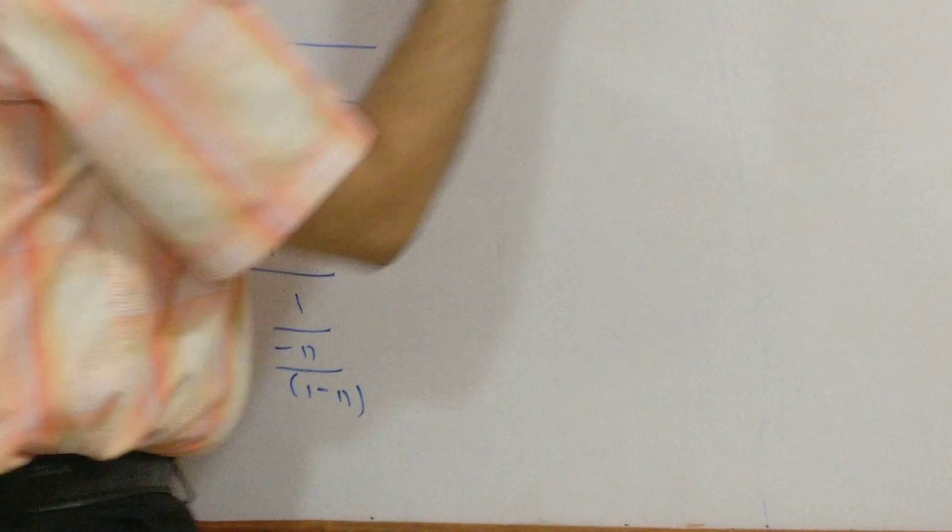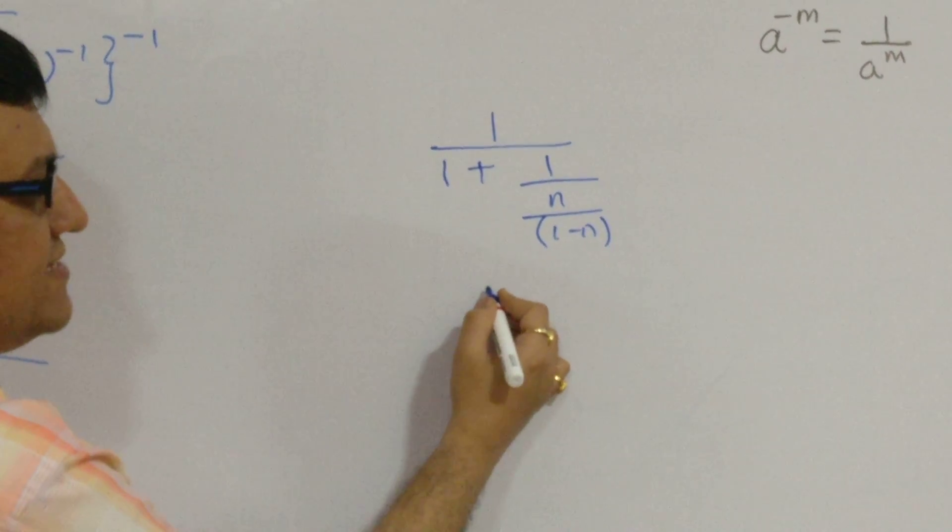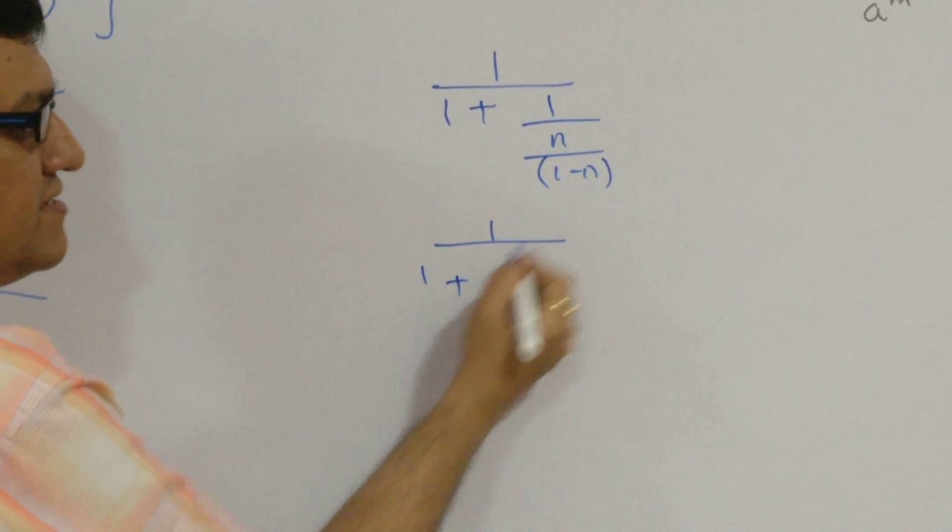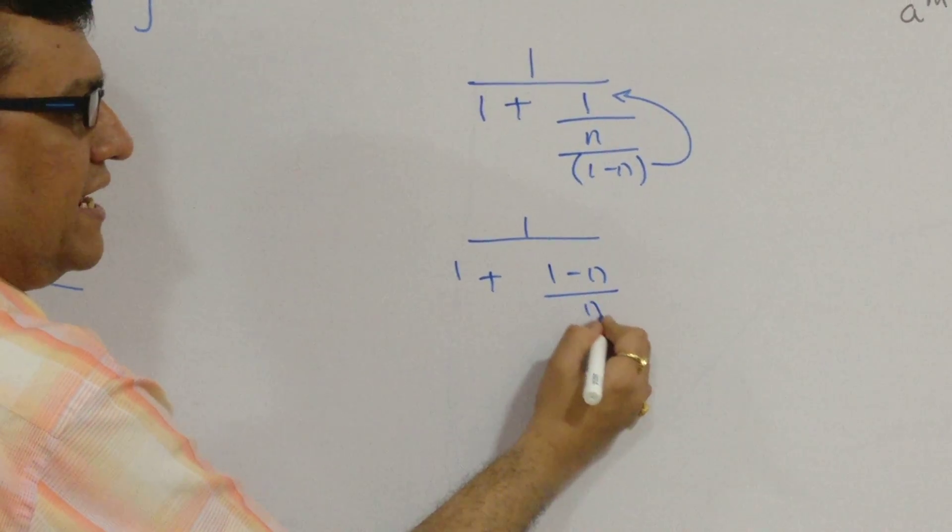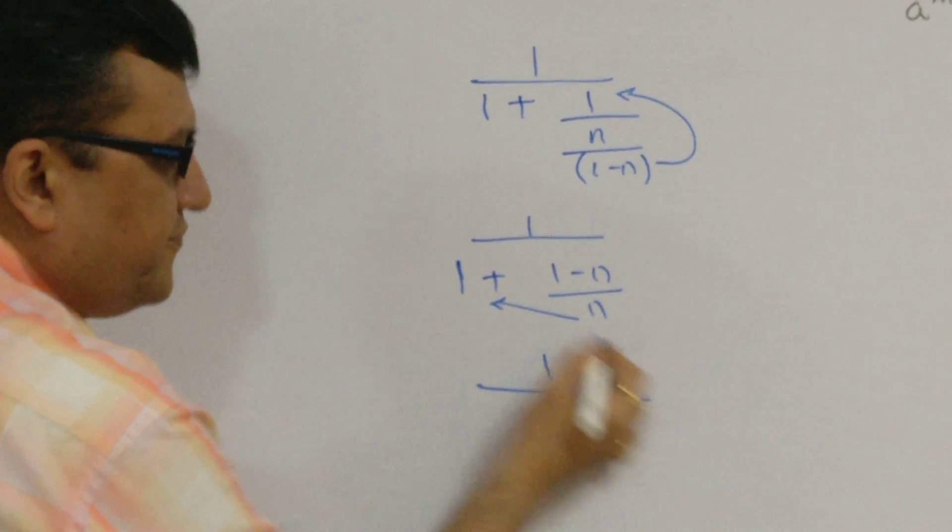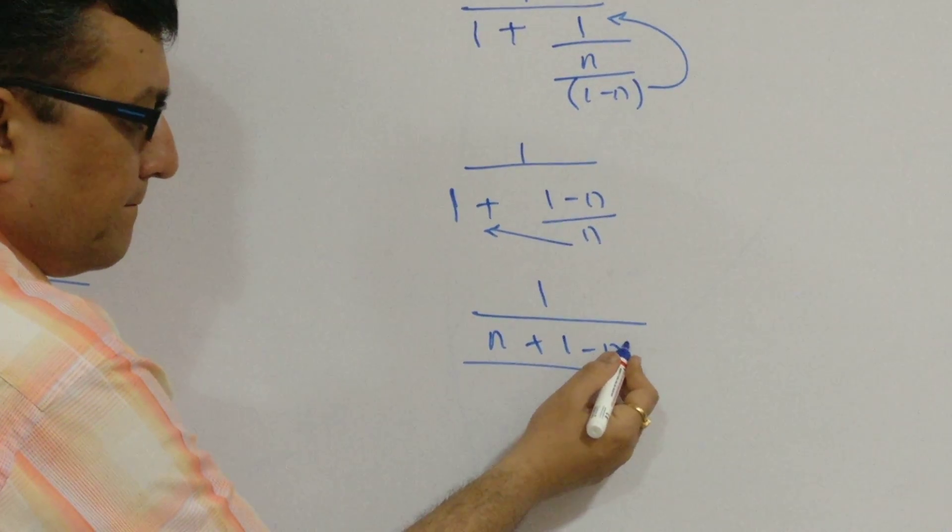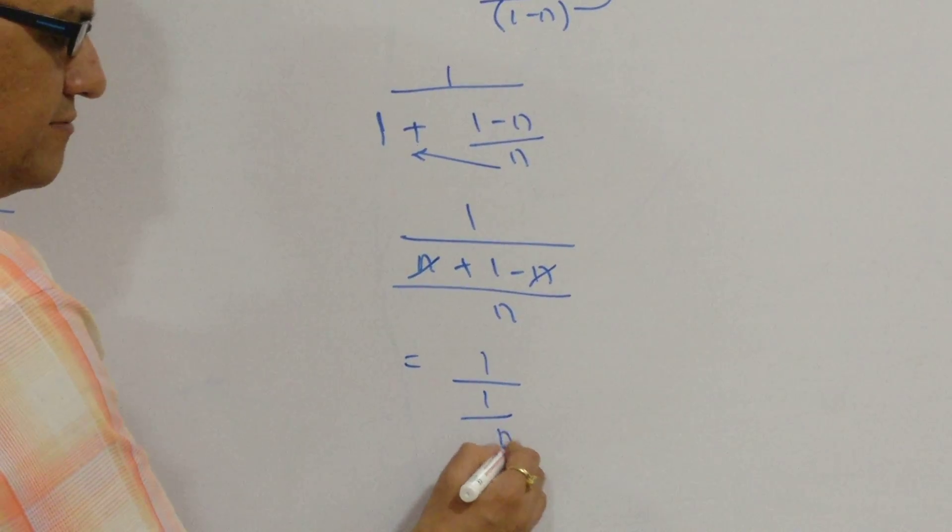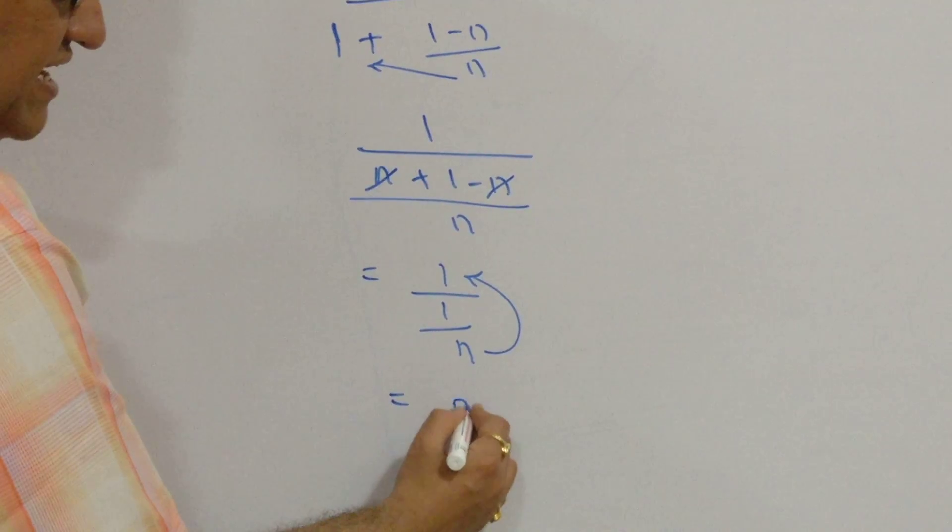Now, what? Again, we are going to go for LCM. What is the LCM over here? We shall say 1 upon. If you want, you can take only this much. And, I shall say 1 plus. This one goes in the numerator. And, I shall get 1 minus n the whole by n. The same LCM gets applied here as well. 1 upon n plus 1 minus n the whole by n. Minus n plus n gets cancelled off. We are left with 1 upon 1 by n. This n shall go up. And, we are having the final answer as n.